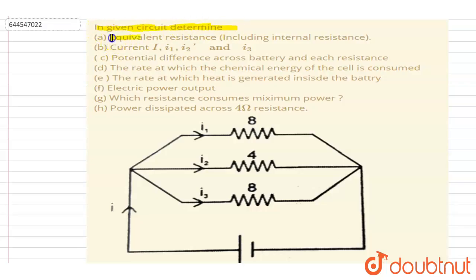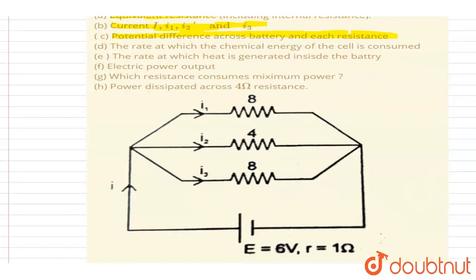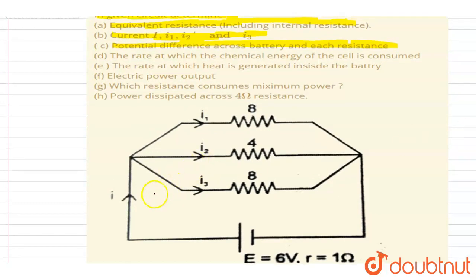Hello everyone. In the given circuit, determine the equivalent resistance including the internal resistance, current i1, i2, i3, and i, the potential difference across the battery, and each resistance. So let us find out.